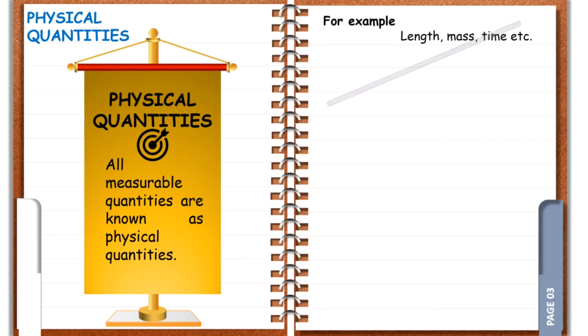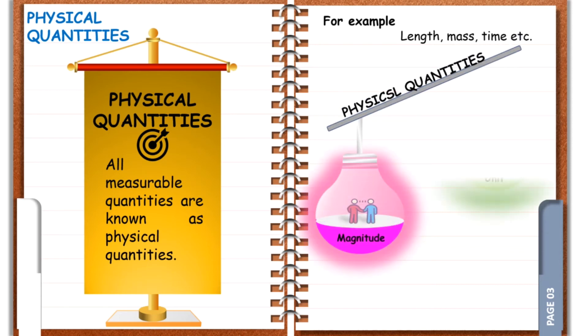All physical quantities consist of two parts. One part describes its magnitude and the other part describes its units.